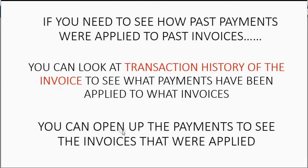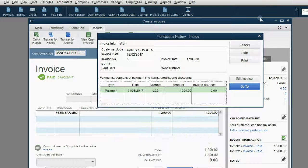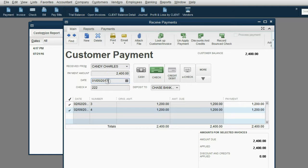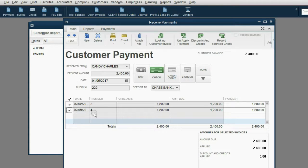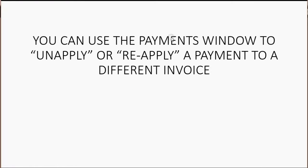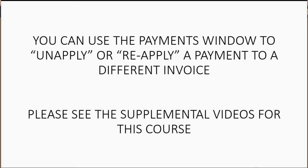The other way to do it is to open up the payment to see how the invoices were applied. For example, double-clicking the payment for Candy Charles shows that the payment she made on January 5th was applied to the invoice made on February 2nd and also to the invoice made on February 9th. You should also know that you can use the payments window to unapply or reapply a payment to a different invoice. If you want to be an expert on how to do that, see the supplemental videos provided in this course.